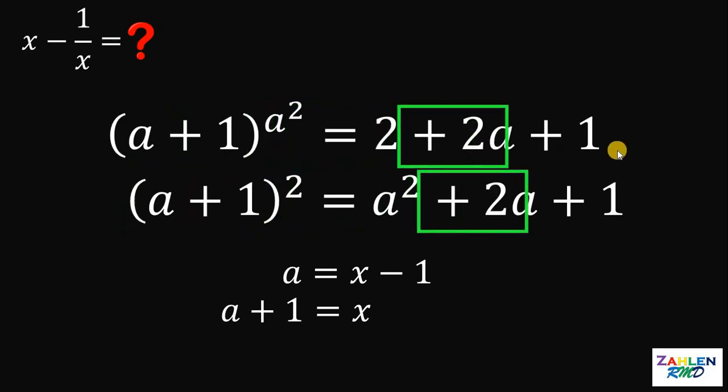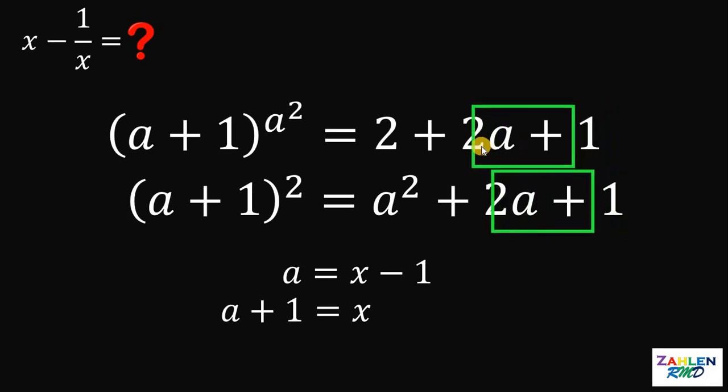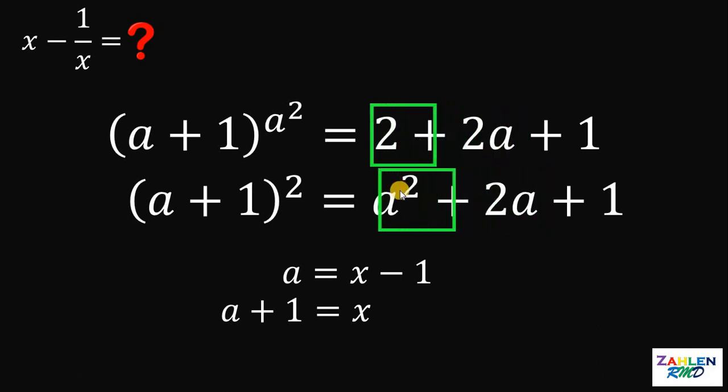Also, we have the same constant of positive 1. Again, we also have the same term which is 2 times a. Now, we have that a squared must be equal to 2. And also take note that we also have the same thing right here that says that a squared must be also equal to 2.